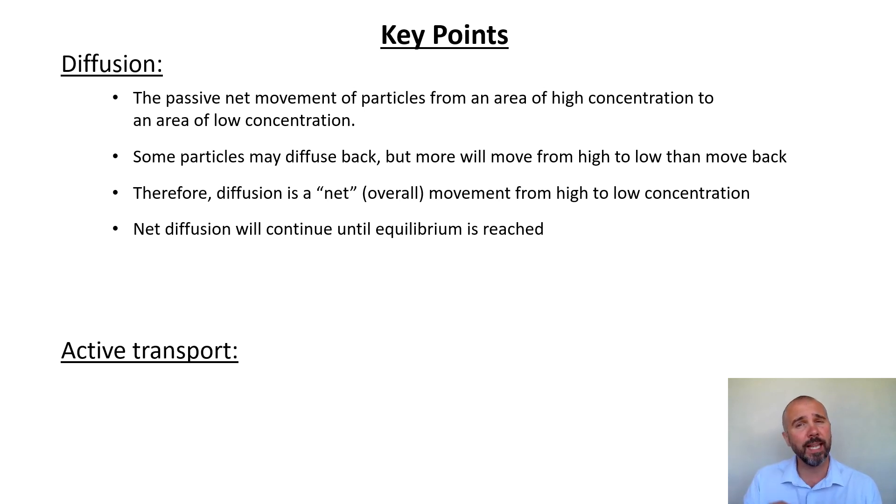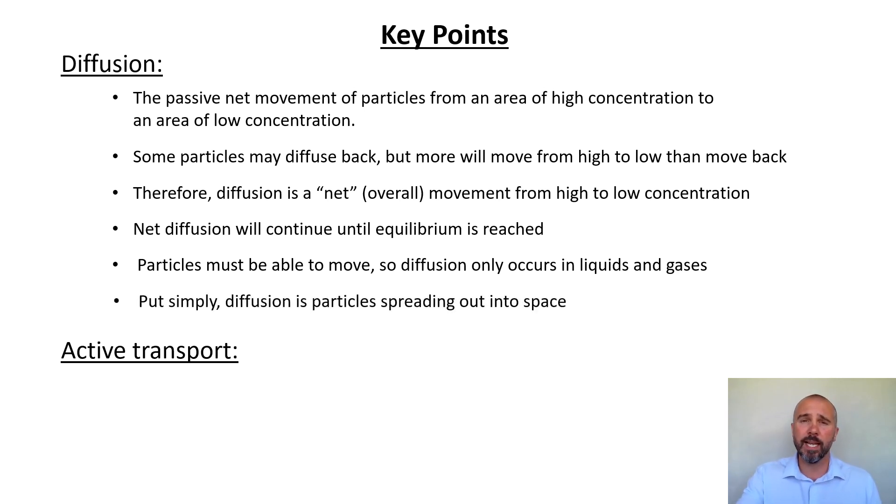Net diffusion will continue until equilibrium is reached. So remember, that's where we have the high and the low. But as things move, the high gets lower and the low gets higher until they're equal. That is equilibrium. At that point, diffusion is equal in both directions. If you still want to shift things across, that's where you need active transport. Particles must be able to move. You've got to have free movement of particles for diffusion to occur. So it can only occur in liquids and gases. Remember, in solids, the particles are really tightly jammed together and their bonds are in place so they can't move. If they can't move, they can't diffuse. So you'll only get diffusion in liquids and gases. And lastly, put simply, diffusion is just particles spreading out into space.